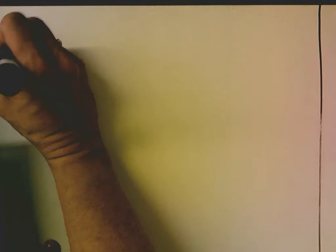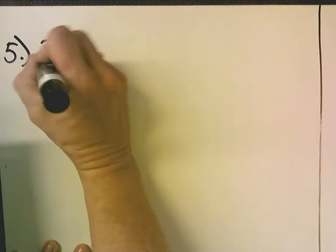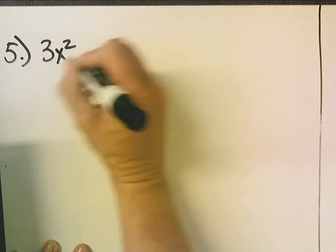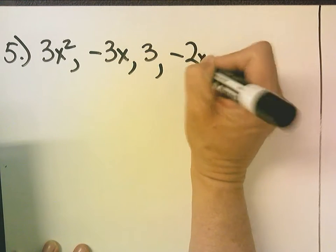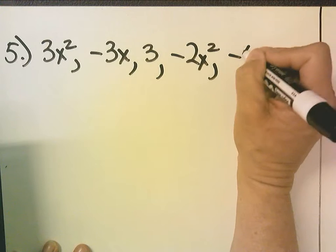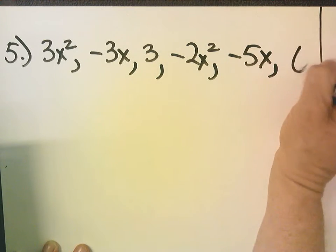And now, let's jump down to, what's a good one? Let's jump down to number 5. Number 5 is 3x squared, negative 3x, 3, negative 2x squared, negative 5x, and 6.